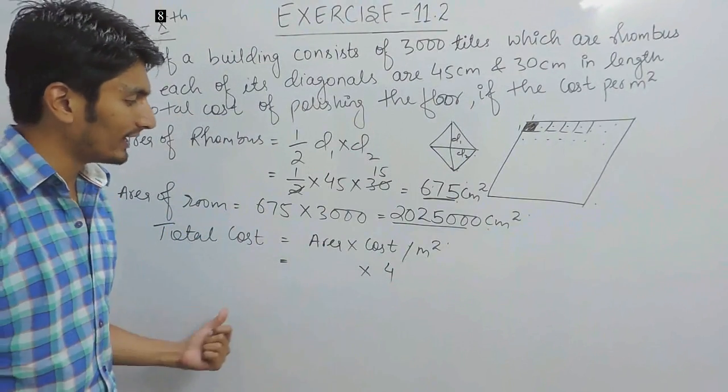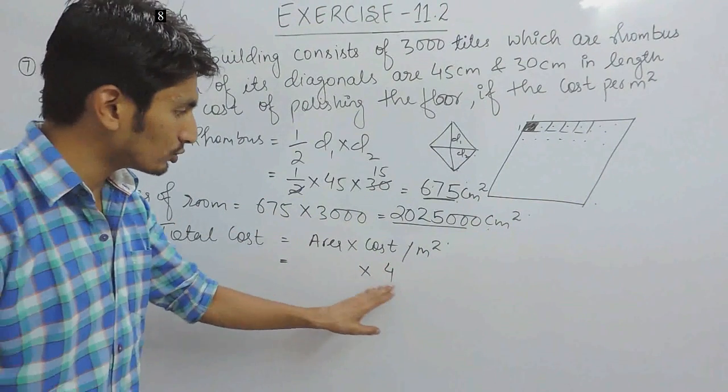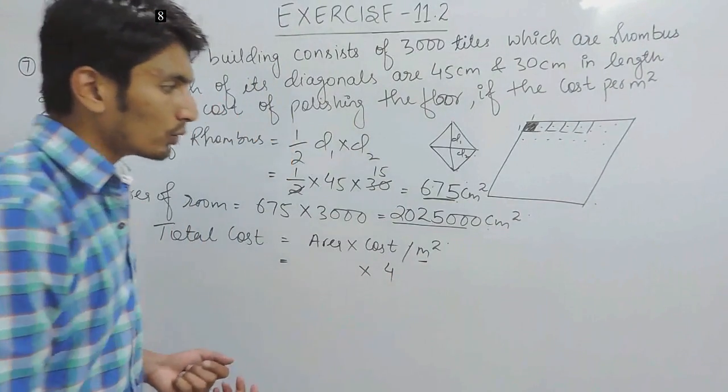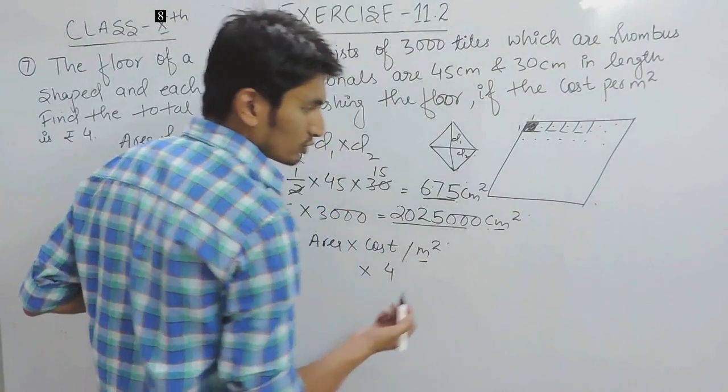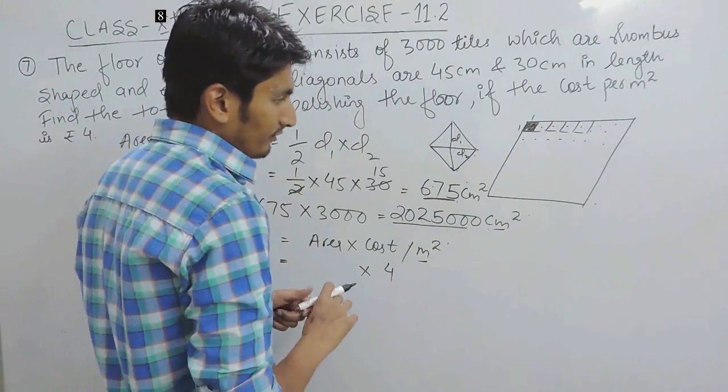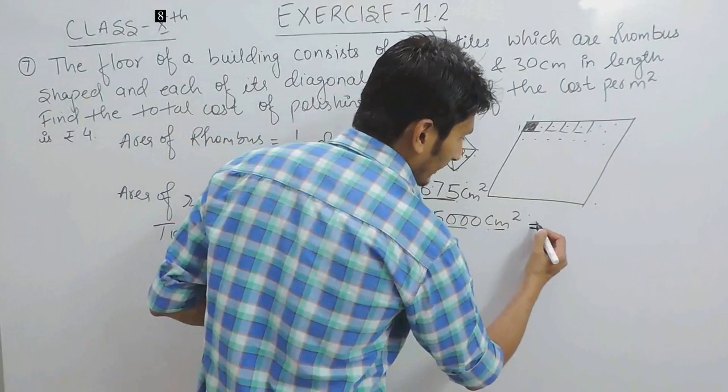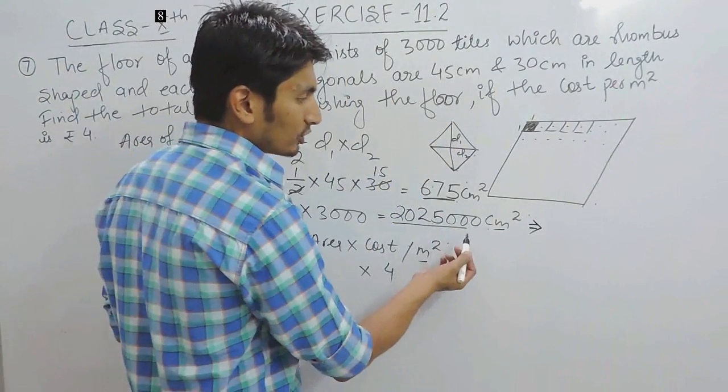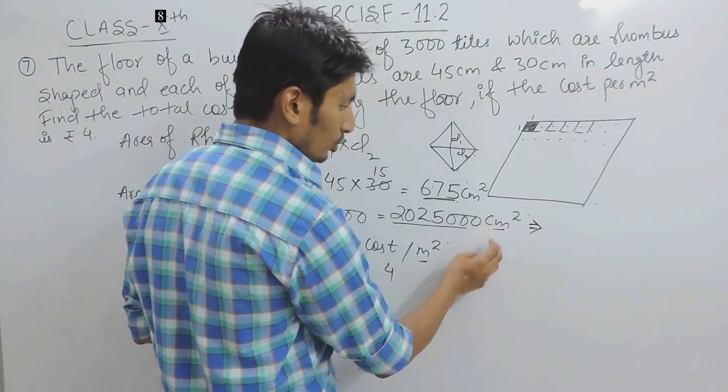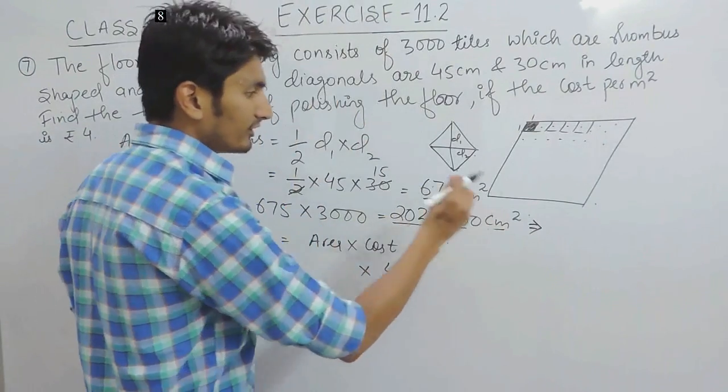I have to multiply this area with 4, so I will get the total cost. But one thing is important: when we are multiplying these two, both SI units should be same. Here, the cost is per meter square but our area is in centimeter square. So first of all, convert this area into meter square. For that, we have to convert this centimeter into meters, and we know that whenever we have to convert centimeter into meters, we have to divide by 100. But there are 2 centimeters, so we would have to divide this area with 200s.